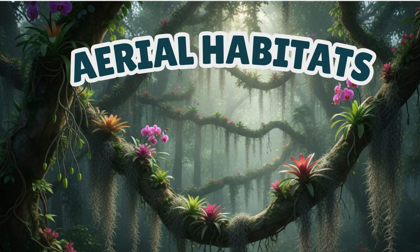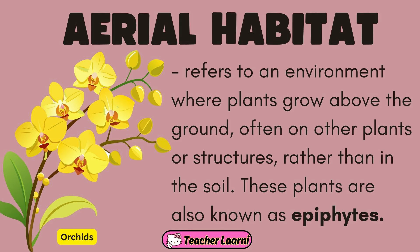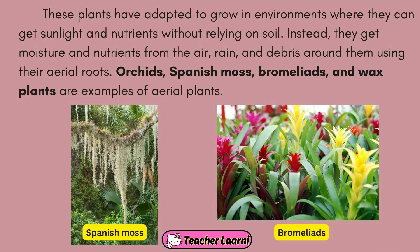The last type of habitat is the aerial habitat. Aerial habitat refers to an environment where plants grow above the ground, often on other plants or structures, rather than in the soil. These plants are also known as epiphytes. They have adapted to grow in environments where they can get sunlight and nutrients without relying on soil. Instead, they get moisture and nutrients from the air, rain, and debris around them using their aerial roots. Orchids, Spanish moss, bromeliads, and wax plants are examples of aerial plants.